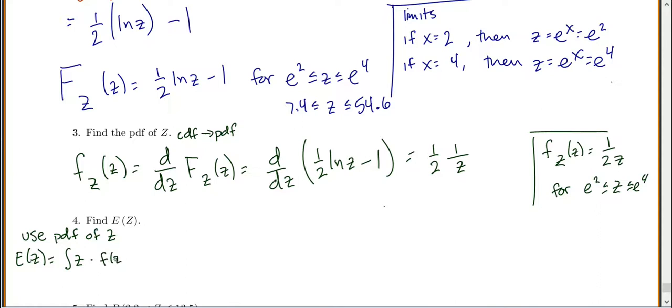And in our case, that would be the integral from e to the 2 to e to the 4 of z times 1 over 2z dz.